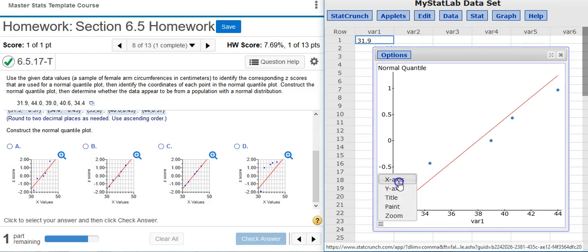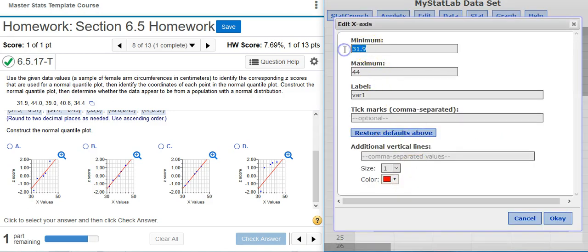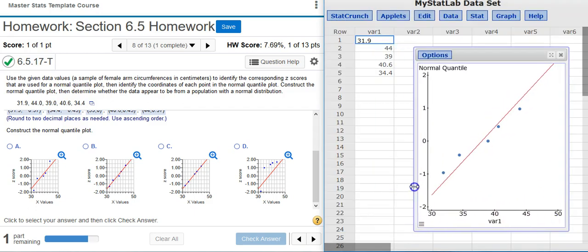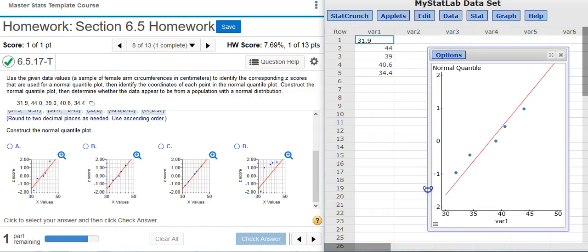I'm going to select x-axis to change the x-axis first. I want a minimum value of 30 and a maximum value of 50. And I'm going to change the y-axis so that it matches also. And I'm going to reduce the width a little bit so that I get something that more or less matches what I'm seeing in my answer options.